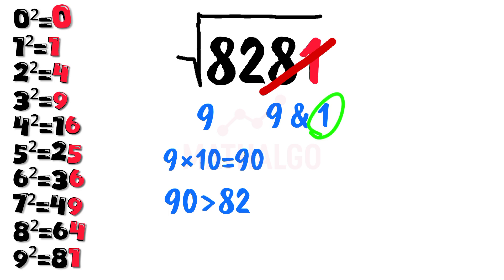Is 82 smaller than 90? Yes. So we pick the smaller answer, which gives us 91. Easy, right?